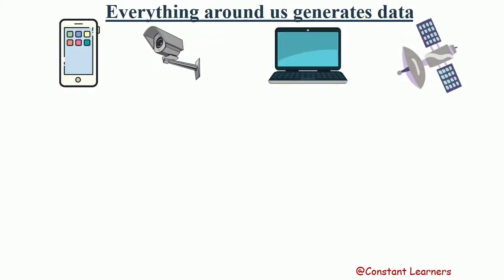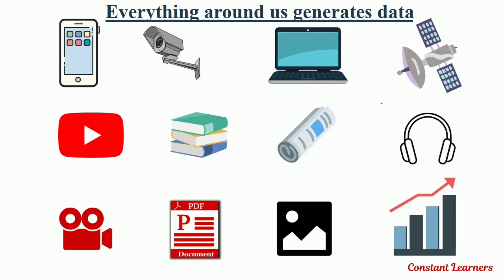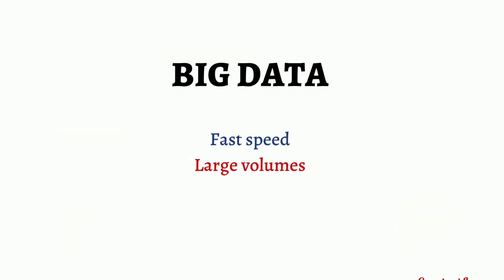Everything around us generates data — cell phones, CCTV cameras, browser search history, satellites, etc. All of these generate data. This data is coming at a very fast speed and in very large volumes, and this is nothing but big data.